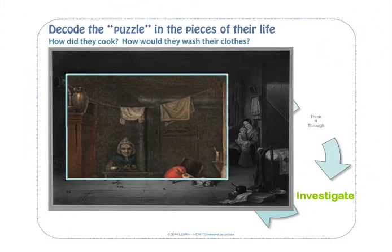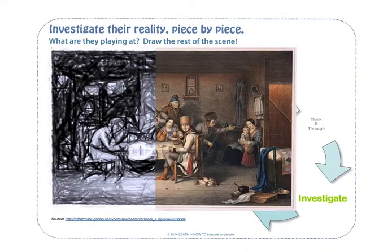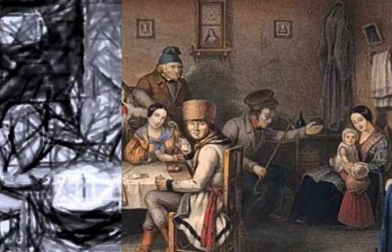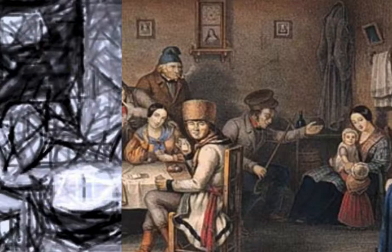Pick another picture and decode all the puzzle pieces of their life — how did they cook, how did they wash their clothing? Zoom in on this part of the picture and decide what's going on with this particular character. You can investigate their reality piece by piece to discover what they're actually doing. You can block off certain parts of the picture and decide what's happening in the other parts. For example, if you knew only what was happening on the right side, you could draw and imagine what was happening on the left. The interplay between one side and the other can suggest what's going on piece by piece.